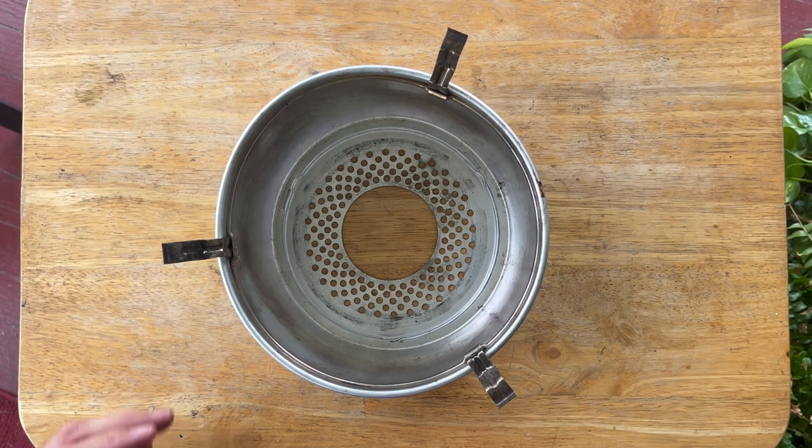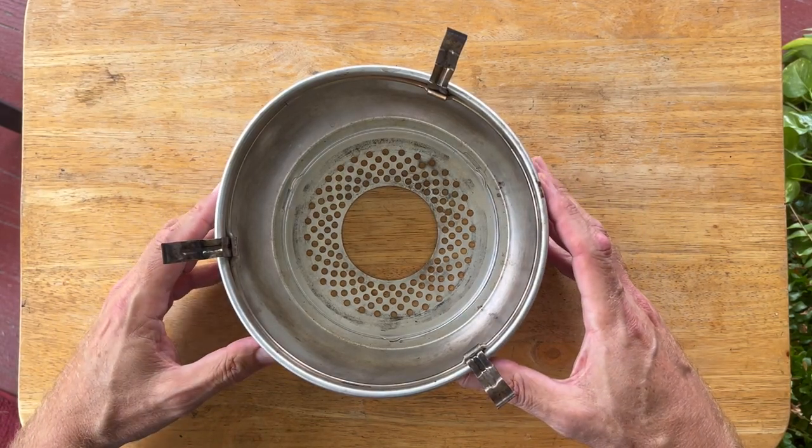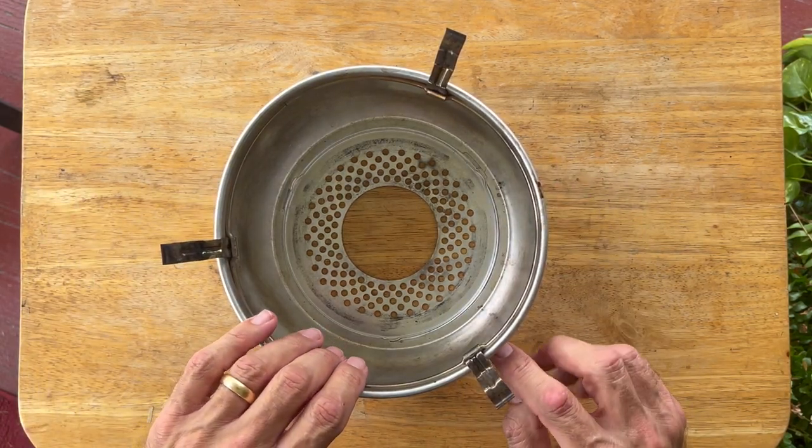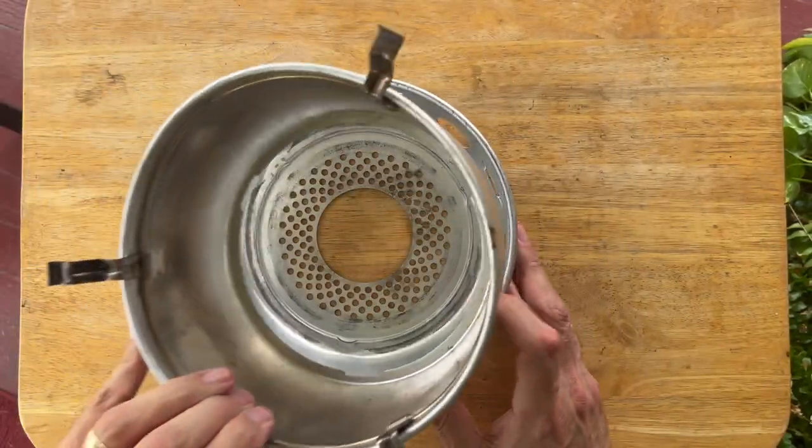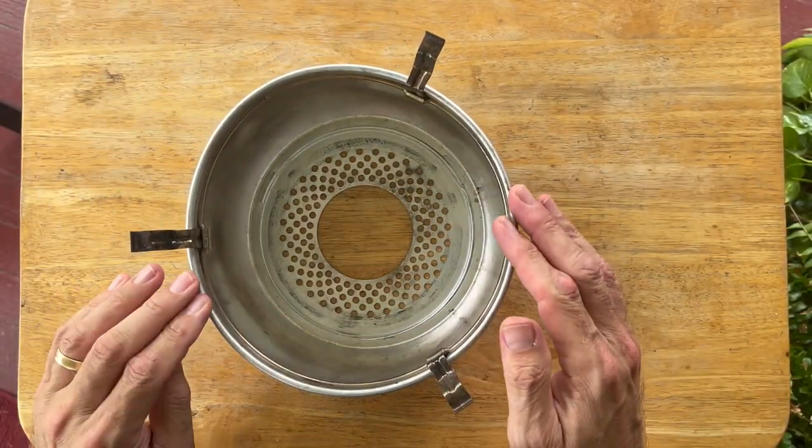So what we've got here is the windscreen, bottom windscreen, pot and support, and the top windscreen.